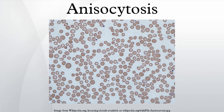Anisocytosis with normal RBC size includes early iron, vitamin B12 or folate deficiency, dimorphic anemia, sickle cell disease, chronic liver disease, and myelodysplastic syndrome.